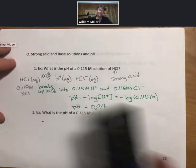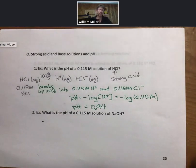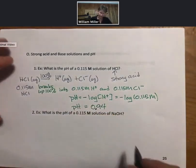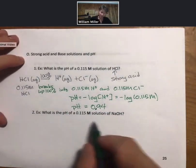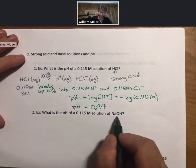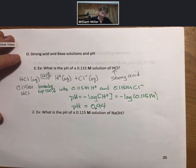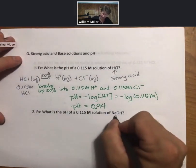We expect that a strong acid solution will have a relatively low pH. Now, let's do a similar example for sodium hydroxide. Similarly, sodium hydroxide is a strong base.